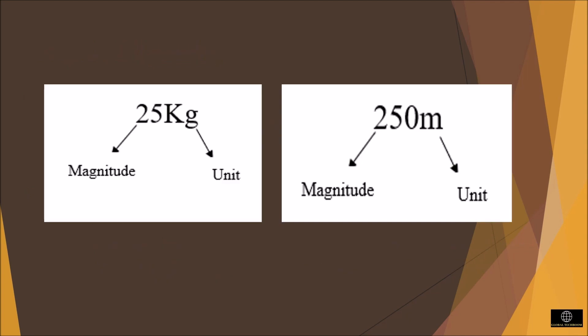Let us consider some examples of physical quantities. In the first example, 25 kg — here 25 represents the magnitude and kg represents the unit. In the next example, 250 meters — 250 represents the magnitude and m, which is meter, represents the unit.